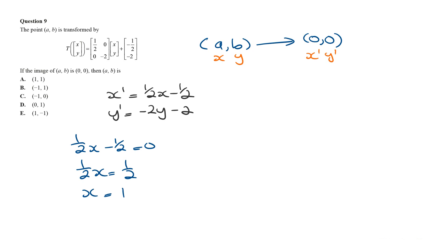And if y dash is equal to 0, then we can say minus 2y minus 2 is equal to 0. So minus 2y is going to be 2, and so y is going to be negative 1.